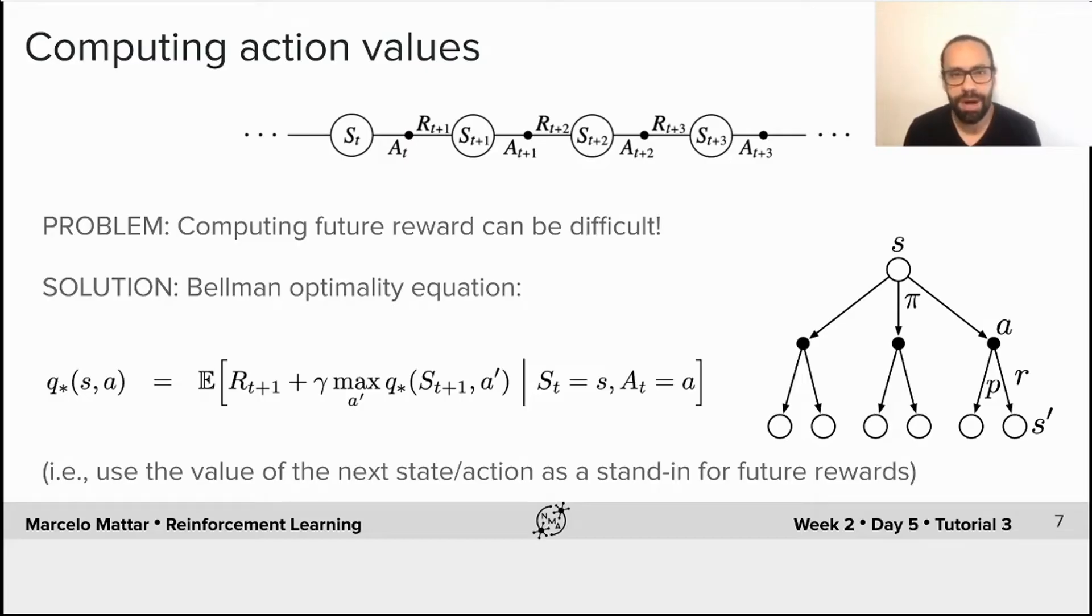So as you saw in the intro lecture given by Doina Precup, one solution here would be to use the Bellman equation, which gets around this tricky issue by estimating the value of an action recursively.